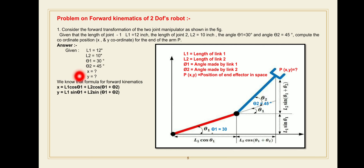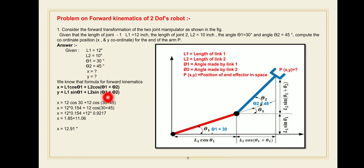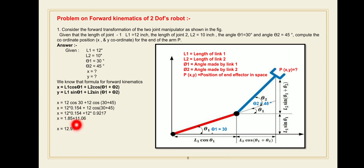For the x coordinate: x = 12·cos(30°) + 12·cos(30° + 45°). Solving this equation gives x = 1.85 + 11.06, so x = 12.91. This is the x coordinate — the total horizontal distance of point P from the origin — which equals 12.91 units.